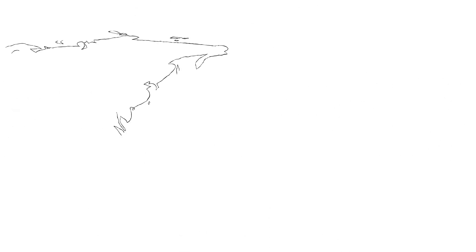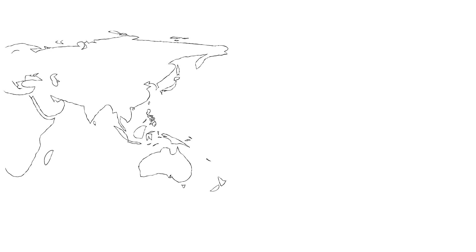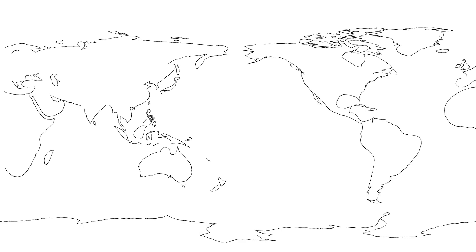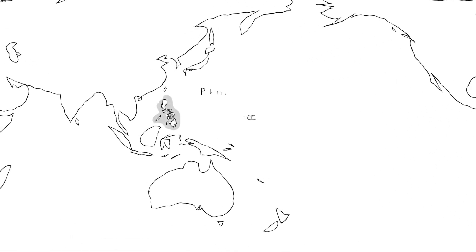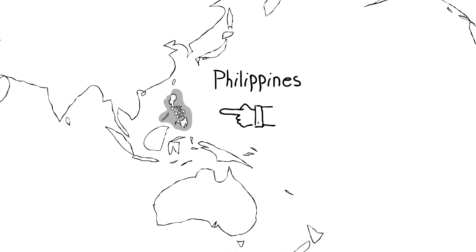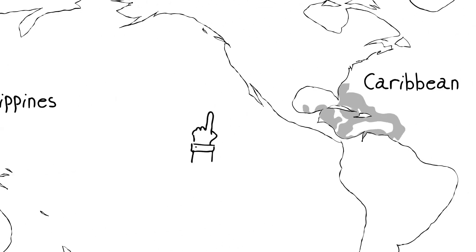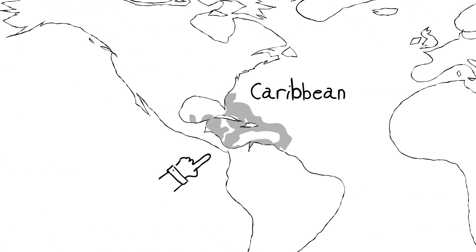Most people are familiar with ecosystems in terms of where they are, that is, in terms of ecosystem distributions. A tropical reef in the Philippines will still be a coral reef, but in terms of species composition could be very, very different from a reef in the Caribbean.